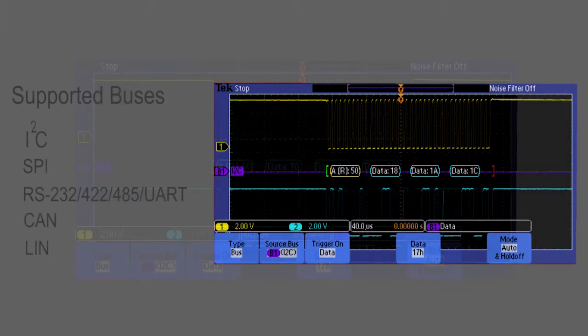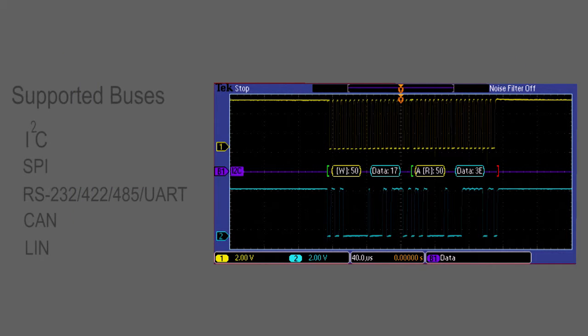The MSO DPO 2000 offers the lowest cost option for analyzing common serial buses and parallel buses on the market.